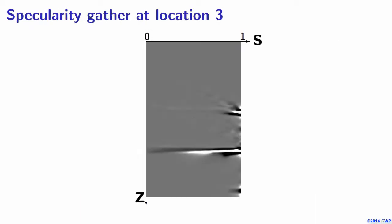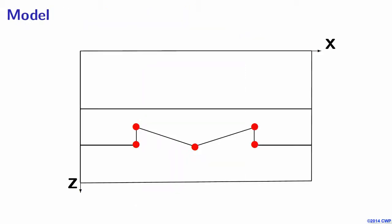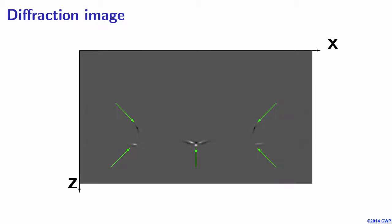Considering these image points, we have specularity gathers. Going back to the model, these red dots indicate the points where we can expect diffraction from. If we look at the image obtained by taping the specularity gathers, getting rid of the energy focused at s equals 1, and stacking over the specularity dimension, we get this image.